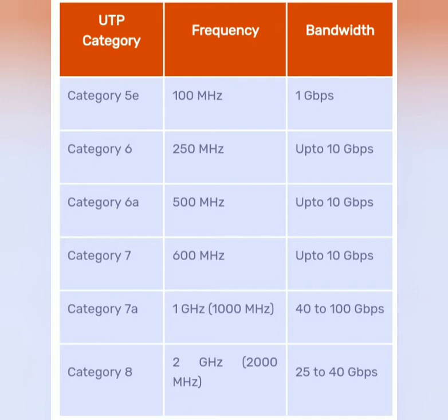Category 5E has a frequency of 100 MHz and a bandwidth of 1 Gbps. Category 6 has a frequency of 250 MHz and a bandwidth of up to 10 Gbps.